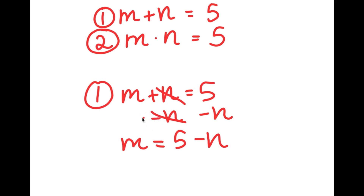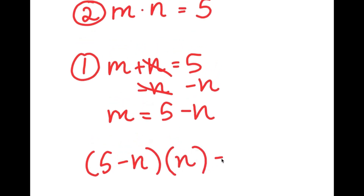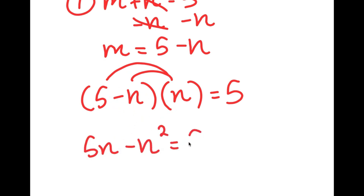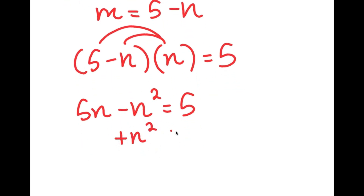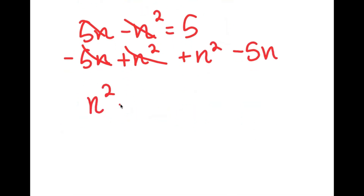The reason I did this is because I can substitute this value of m back into my original equation. So if I substitute this back in, I get (5 minus n) times n is equal to 5. Now I can distribute the n: 5 times n is 5n, and negative n times n is negative n squared, so I have 5n minus n squared equals 5. Adding n squared on both sides and subtracting 5n on both sides, I get n squared minus 5n plus 5 is equal to 0.